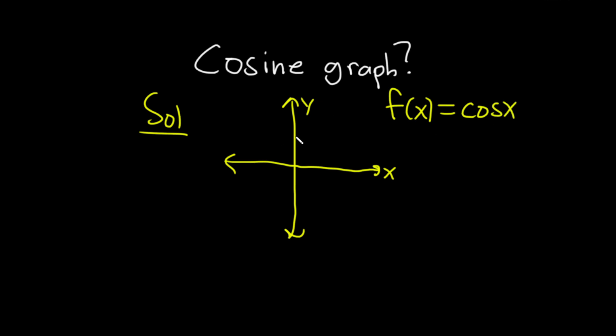And you should just memorize basically that it starts right here at 1. And that's because if you plug in 0 to your function f(x), you get the cosine of 0 and we know that the cosine of 0 is 1. So that's a value you just memorize. You can memorize it from here or you can memorize it from the unit circle as well.